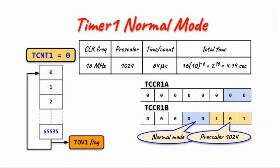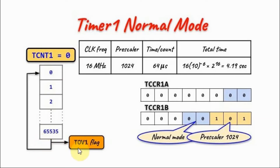In this first example we'll be programming Timer 1 in normal mode. These are the two bytes we copy into Control Register A and Control Register B to give us normal mode with prescaler 1024. The Timer Counter Register is initialized with a value of zero so that the count begins from zero all the way to 65535, and on the next clock count the timer overflow flag will be set. This flag is set every 4.19 seconds.